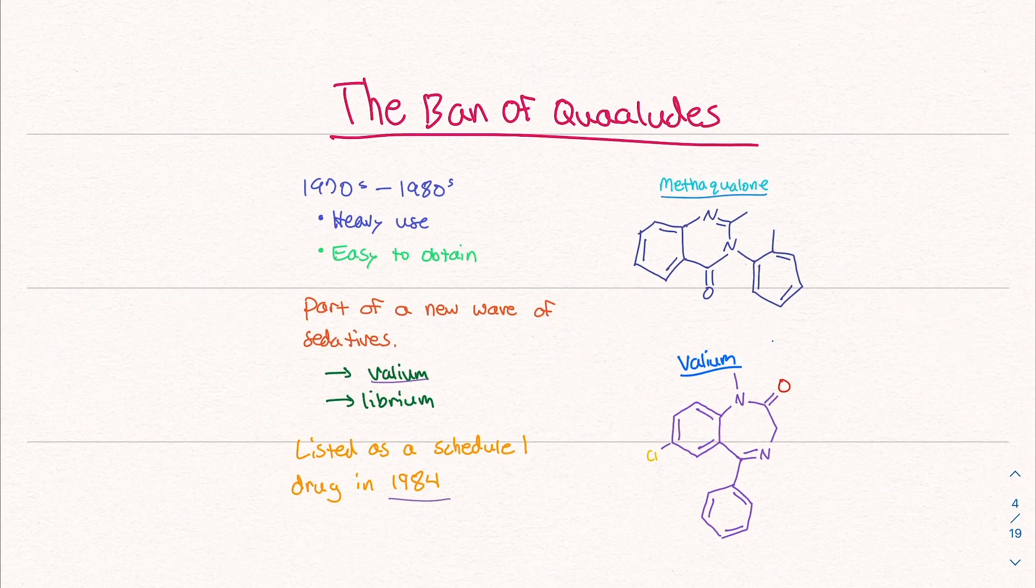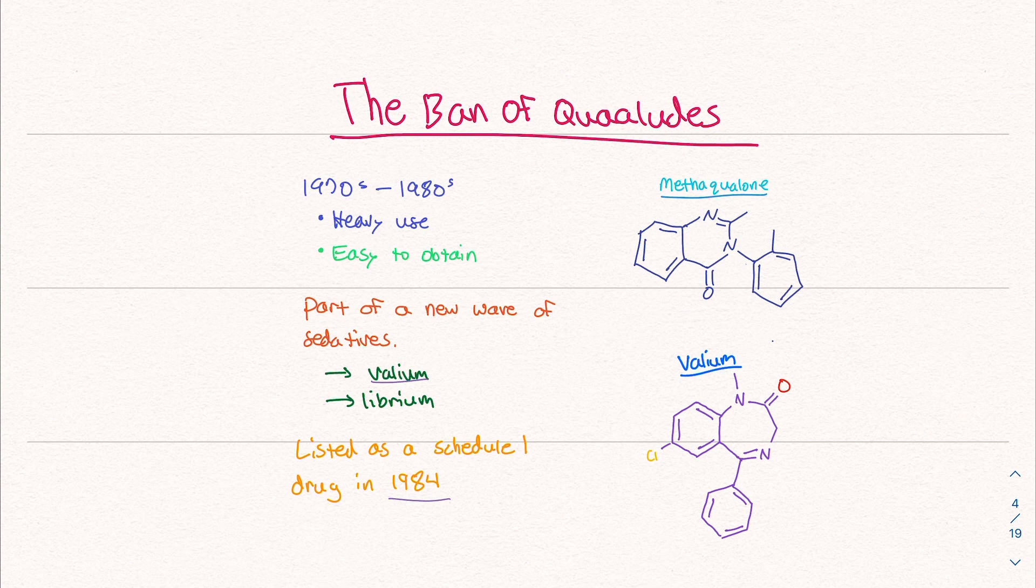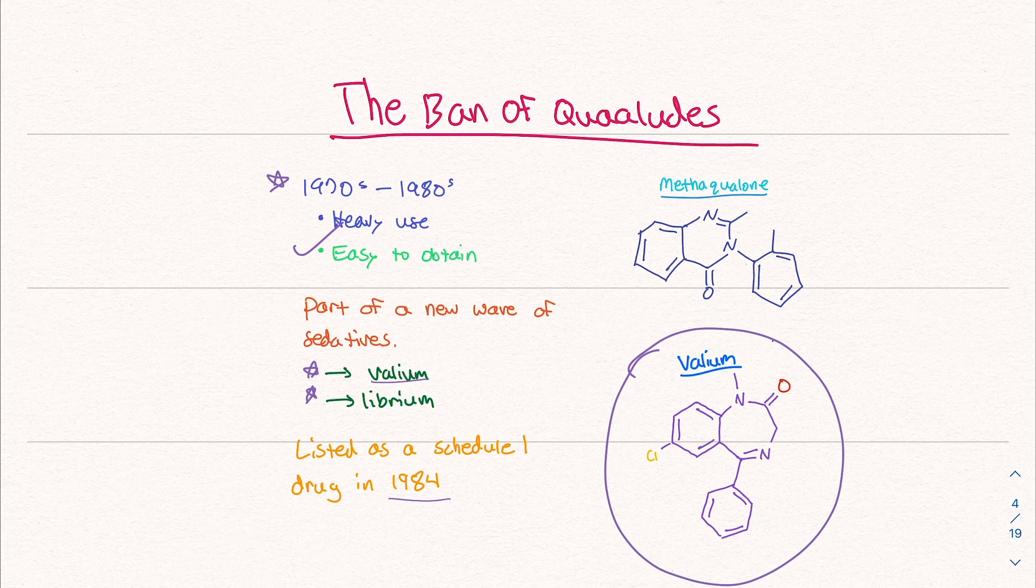So lastly, let's talk about the ban of quaaludes. Quaaludes were used heavily in the seventies and eighties. And it was very easy to obtain from the research I did. I mean, you could go to a little clinic and they give them to you like candy. The fifties and sixties were a big time for barbiturates like phenobarbital, pentobarbital. Those aren't used as much, at least from what I understand, they're not prescribed a whole lot. Quaaludes are a part of this new wave or were a part of this new wave of sedatives. I think the pharmaceutical companies just needed to make more money, so they put this out.